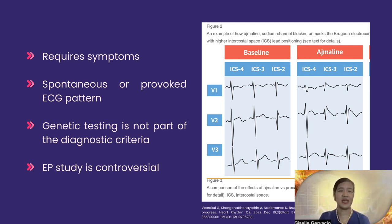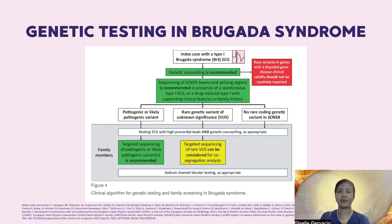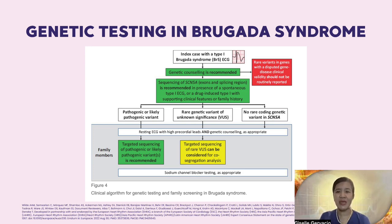Genetic testing at the moment has a limited role in the clinic, and EP study has a class 2B recommendation that remains controversial. In some clinics, genetic testing may be used and has a particularly strong role if the proband is positive for a pathogenic or likely pathogenic gene.